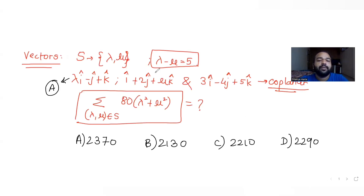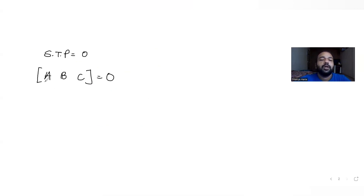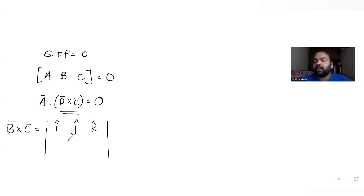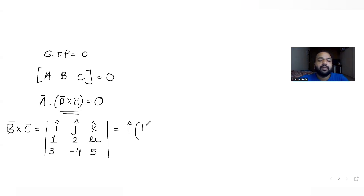So the box product equals a dot (b cross c) = 0. Let's first find the cross product of b and c. The cross product of b and c is given by the determinant with i, j, k in the first row; the coefficients of vector b, which are 1, 2, mu in the second row; and the coefficients of vector c, which are 3, minus 4, 5 in the third row.